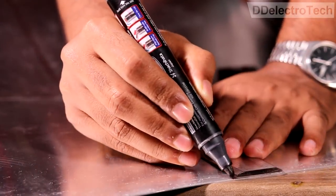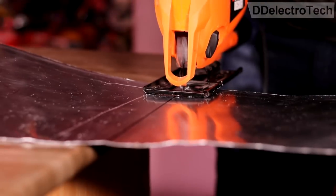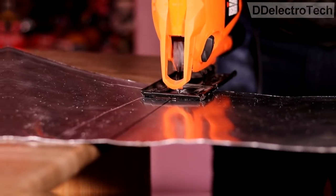To make the outer structure, I am taking the measurement and then I have cut the aluminum sheets using a jigsaw.